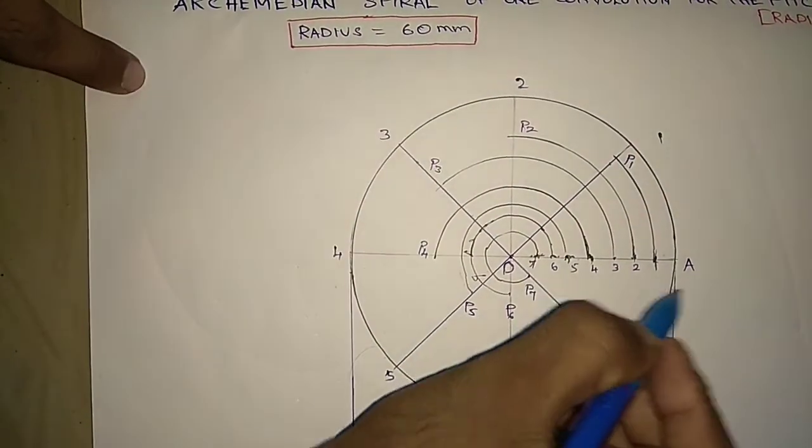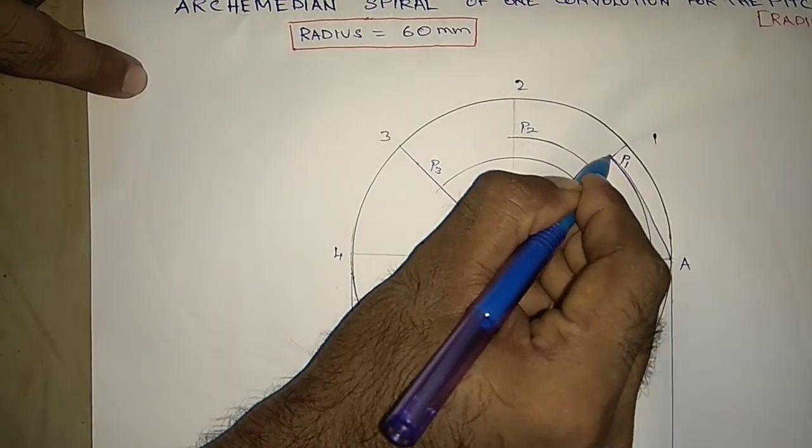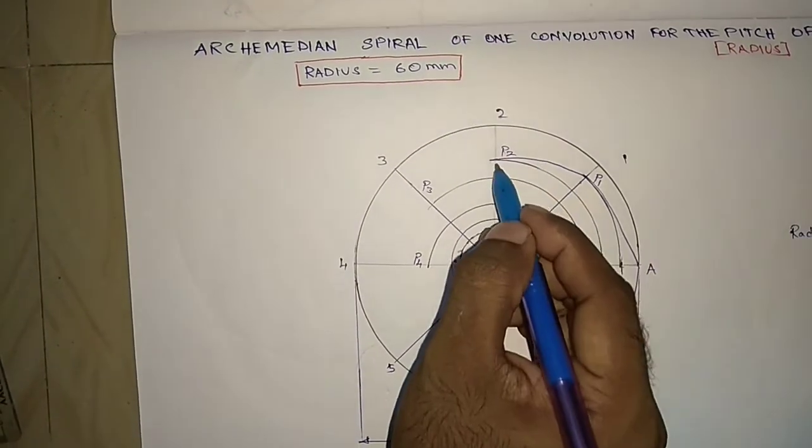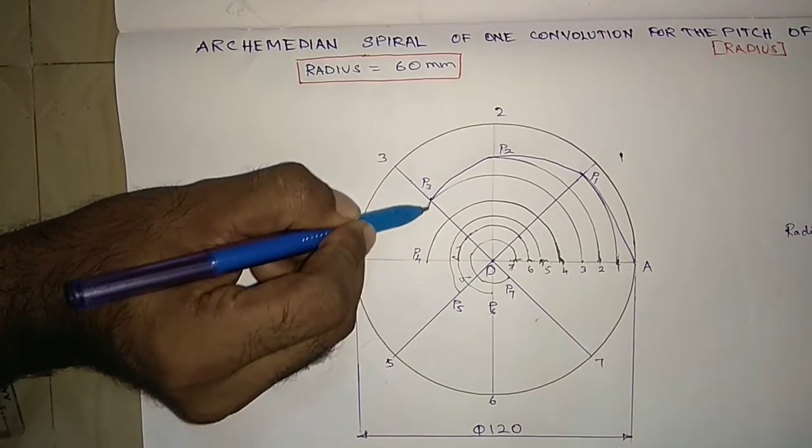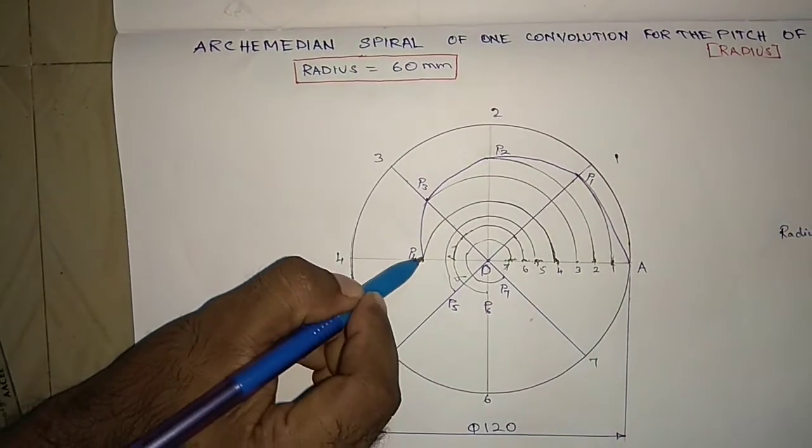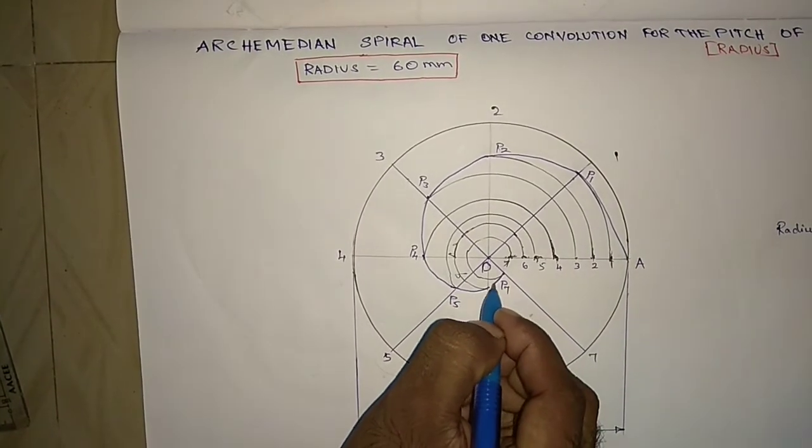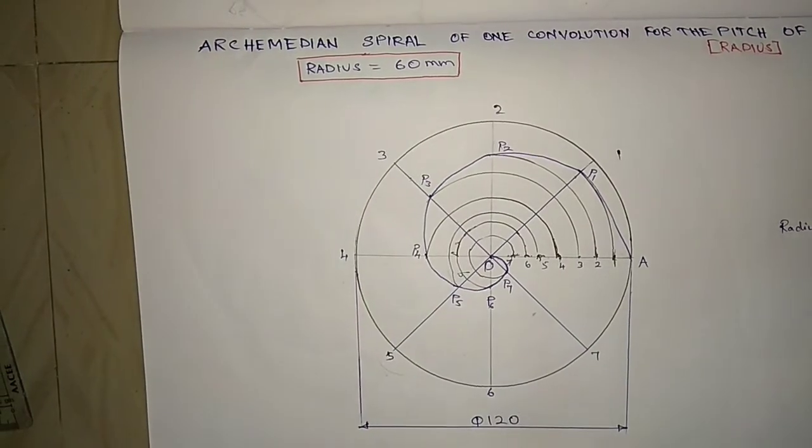Now from the starting point A to 0.1 draw a line as a smooth curve. Then 0.1 to 0.2, then 0.2 to 0.3, 0.3 to 0.4, 0.4 to 0.5, 0.5 to 0.6, 0.6 to 0.7. Then the starting point of the Archimedean spiral.